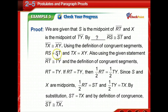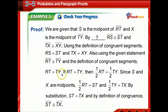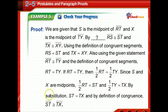We're given that S is the midpoint of RT and X is the midpoint of TY. By the definition of midpoint, RS is congruent to ST and TX is congruent to XY. By the definition of congruent segments, RS equals ST and TX equals XY. Using the given statement that RT is congruent to TY, and by the definition of congruent segments, RT equals TY. Since S and X are midpoints, half of RT equals ST and half of TY equals TX. By substitution, ST equals TX, and by the definition of congruence, ST is congruent to TX. The missing reason is the definition of midpoint.